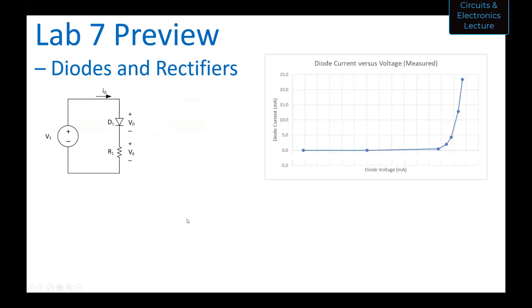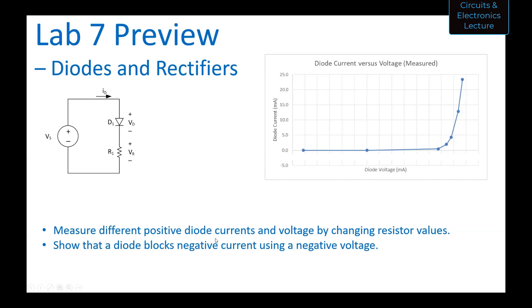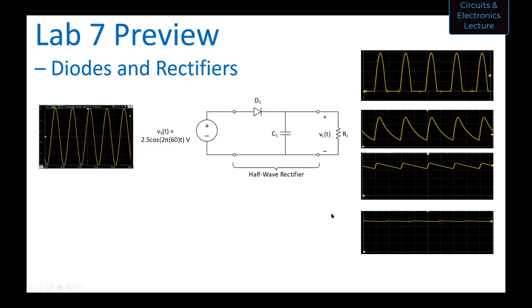In the first part of the lab, you'll build a DC circuit with a set value VS — just like a circuit we analyzed in class. On the right, you'll create a plot of diode current versus voltage to show the diode characteristic. You'll measure different positive diode currents and voltages by changing resistor values, and use that data to show that the diode blocks negative current for negative voltage and passes current for positive voltage. You'll be able to see VF.